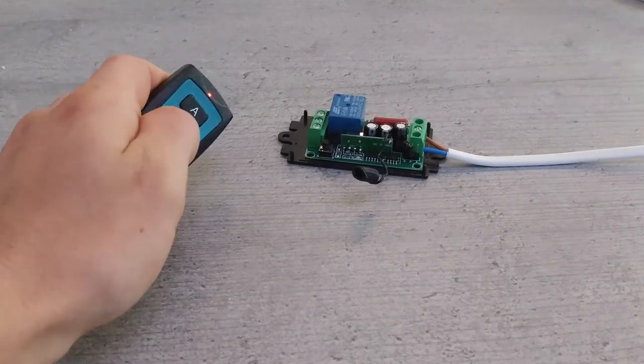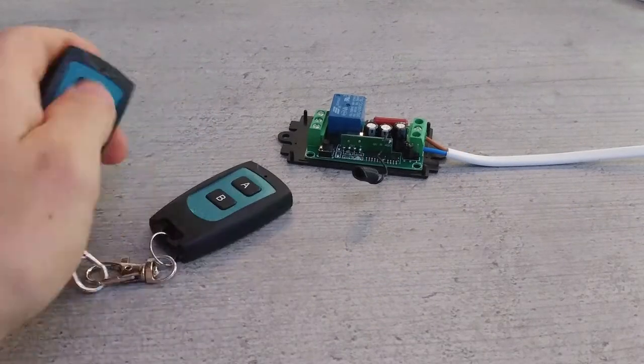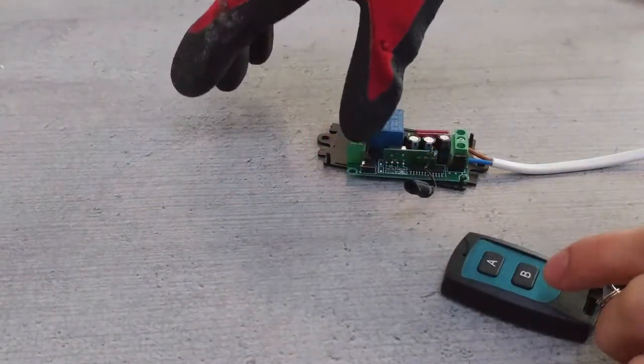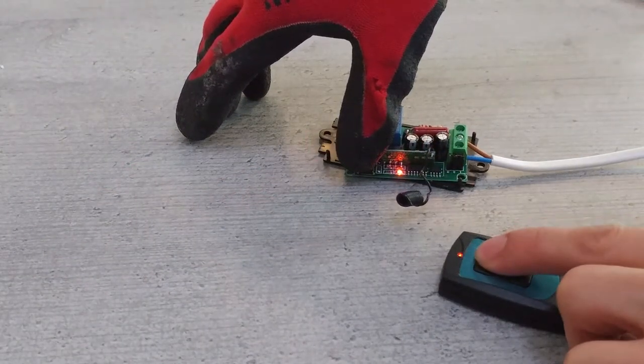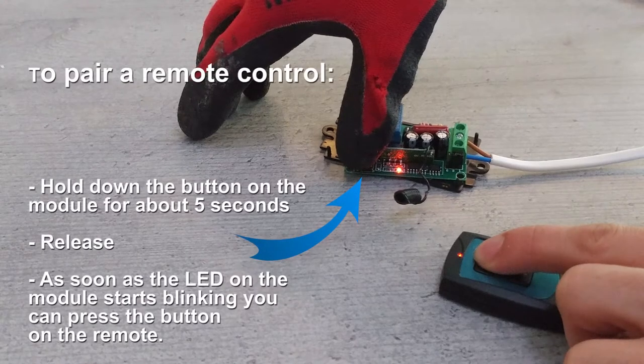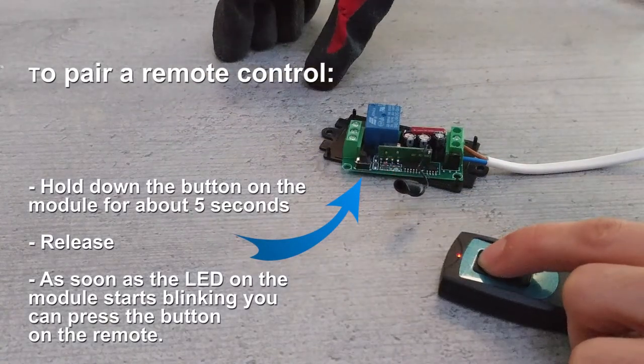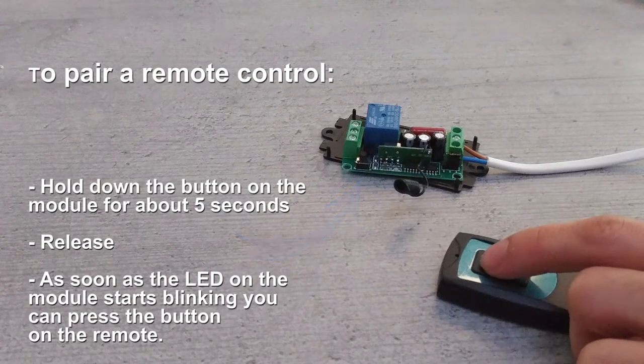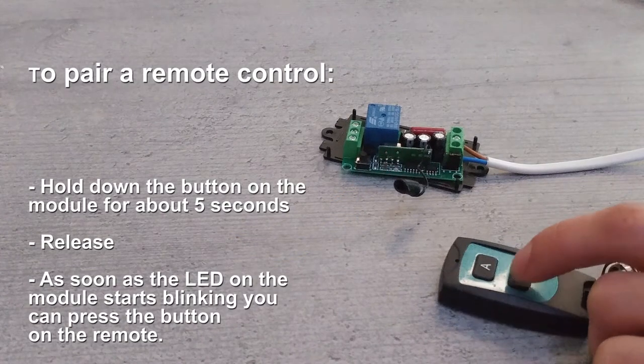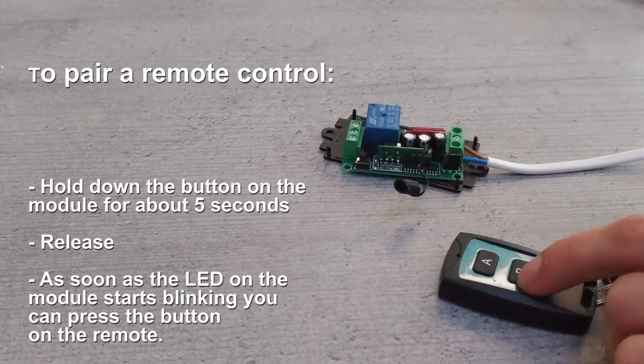Both remote controls seem to work right out of the box but we will be pairing them from the beginning for the sake of demonstration. To pair a remote just hold down the button for a bit until the LED starts blinking. Then press one of the buttons on the remote and it should be paired. As easy as that.